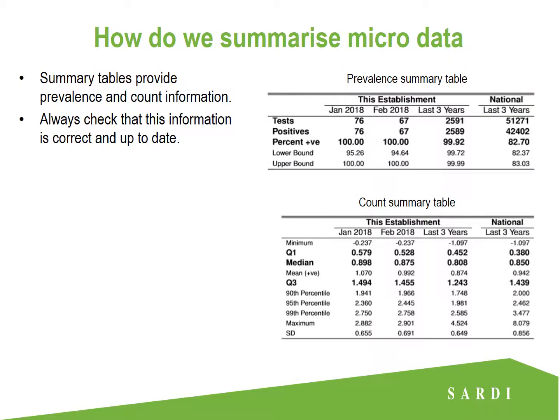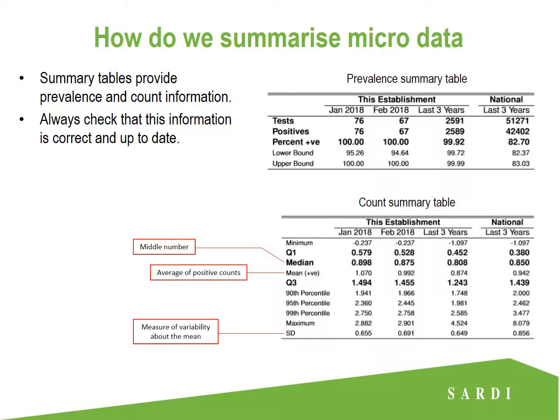One of the most common figure types in your monthly ESAM reports are summary tables, which contain prevalence and count summaries. At the top we have our prevalence summary table and count summary table, showing for the latest month and previous month your establishment prevalence and count summaries. It's good practice to check that the latest month's data is correct and has been updated. The tables also show a summary of results from the previous three years at your establishment, as well as a summary of national counts or prevalence over that same time period. The key figures to look out for are the median — the middle number within our data set — the mean, which is the average of just the positive counts, and the standard deviation or SD, which gives us a measure of our spread about the mean, otherwise known as variability.